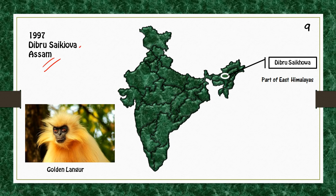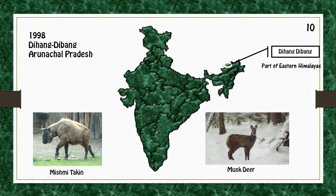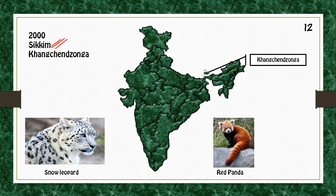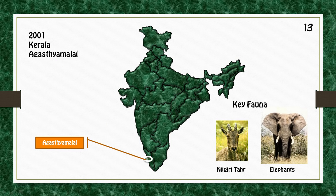In Assam we have Dibru Saikhowa; key fauna include Golden Langur. In Arunachal Pradesh we have Dihang-Dibang; key fauna include Mishmi Takin and Musk Deer. In Madhya Pradesh we have Pachmarhi biosphere reserve; key fauna include Giant Squirrel and Flying Squirrel. In Sikkim we have Khangchendzonga; key fauna include Snow Leopard and Red Panda. In Kerala we have Agasthyamalai biosphere reserve, which has recently been included in UNESCO's Man and Biosphere program; key fauna include Nilgiri Tahr and Elephants.